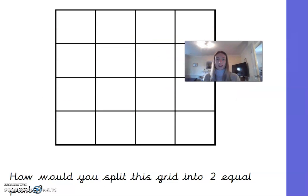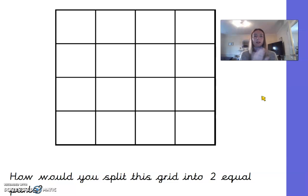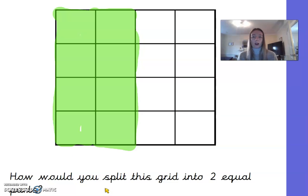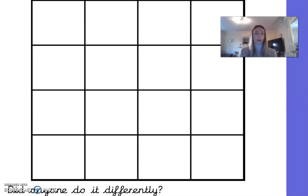Now there is a grid. How would you split it into two equal parts? Pause the video and imagine using a colouring pencil on screen. If I split the grid with a vertical line straight down the middle, I get one equal part in green on one side and another equal part on the other. Some of you might have done it differently — so now think of a different way to split this shape.